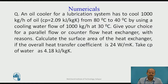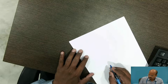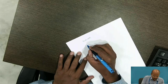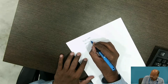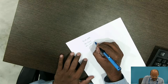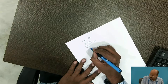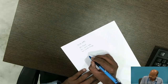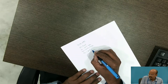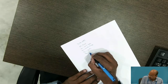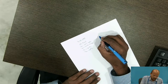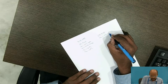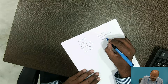In this first numerical, the given data: the hot fluid has a flow rate of 1000 kg per hour, specific heat 2.09 kJ per kg, THI 80 degree Celsius, THO 40 degree Celsius. The cold fluid has a mass flow rate of 1000 kg per hour, and the inlet temperature is 30 degree Celsius.